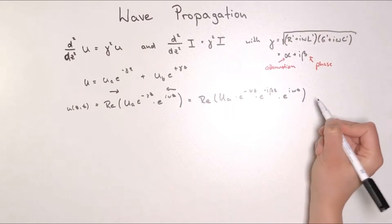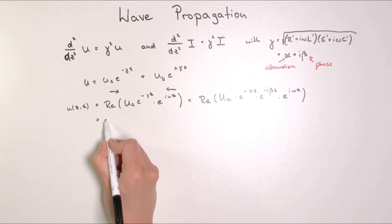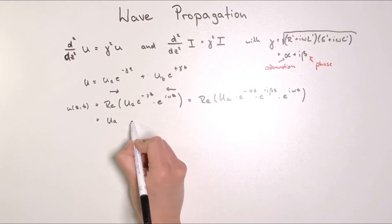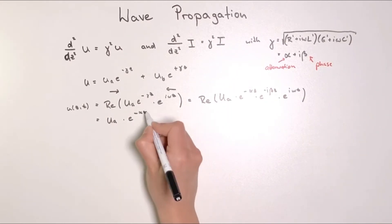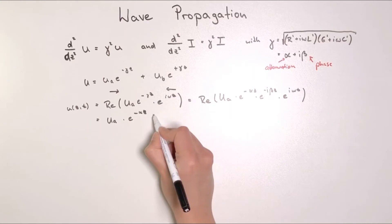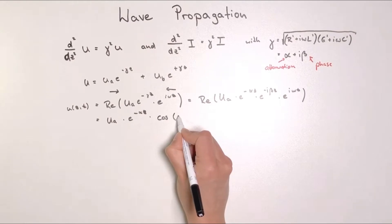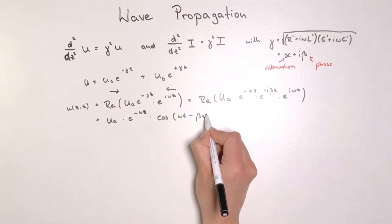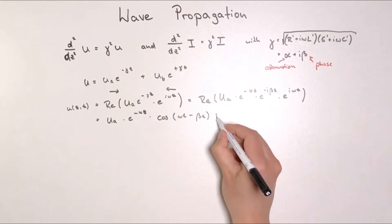Now when we take the real part, the first thing we can do is pull the amplitude out, so Ua is just a prefactor. Then e to the power of minus alpha z is real, so we pull that out as well. The real part of the complex wave equation gives us the cosine term, so we have Ua times e to the minus alpha z times cosine of omega t minus beta z. This is neat because it's a function we can draw immediately.